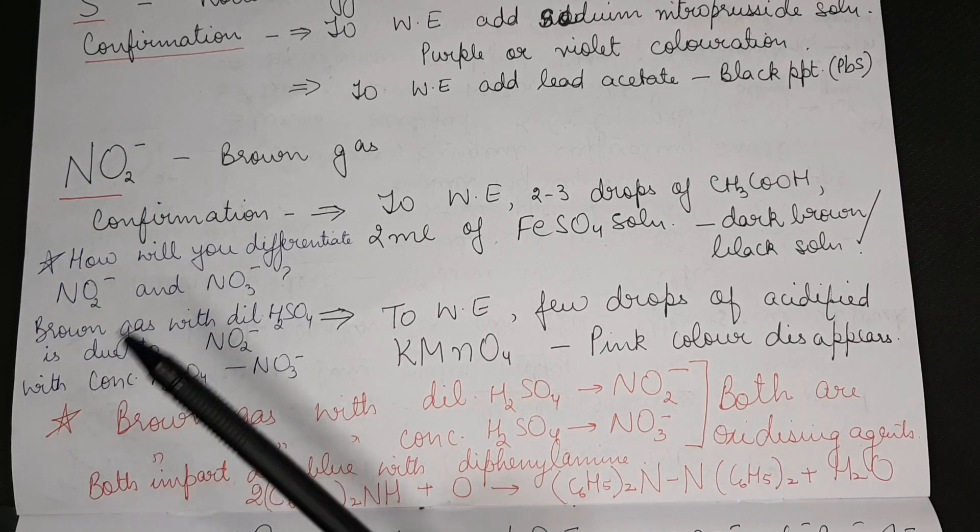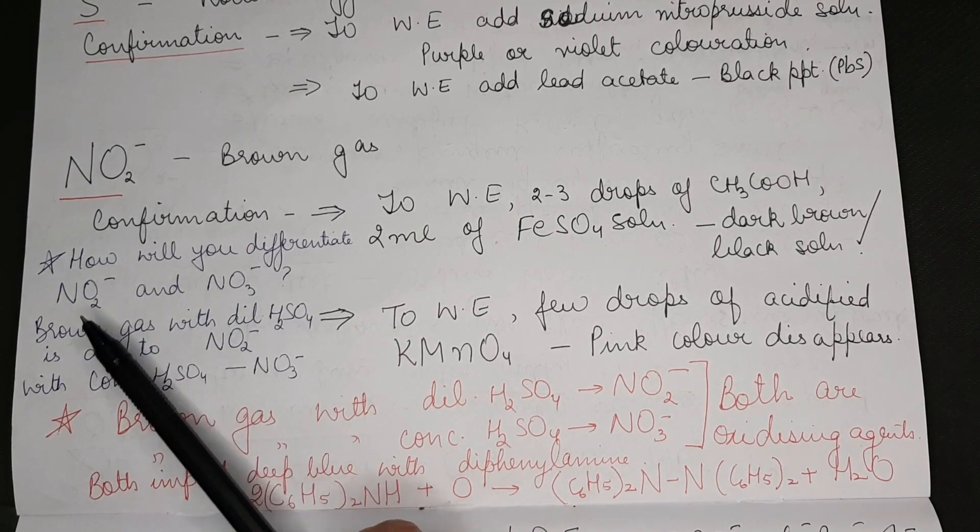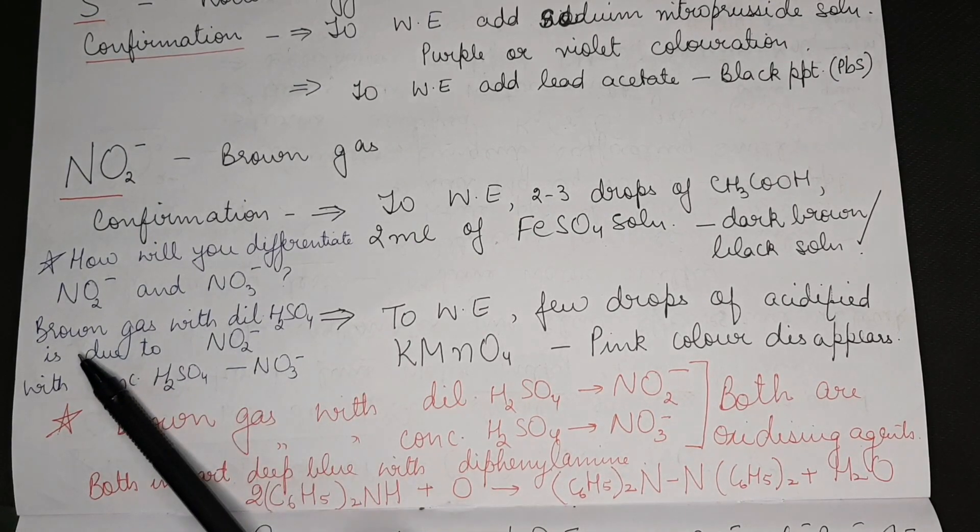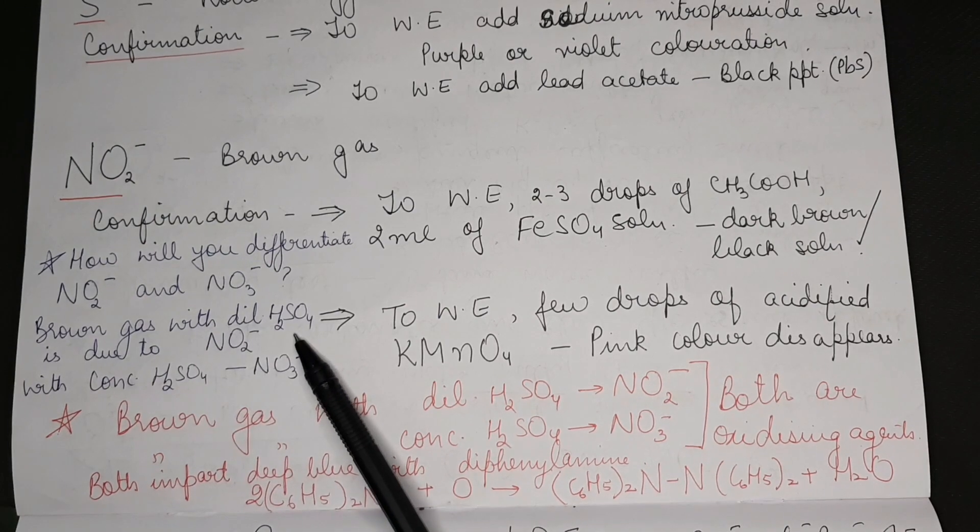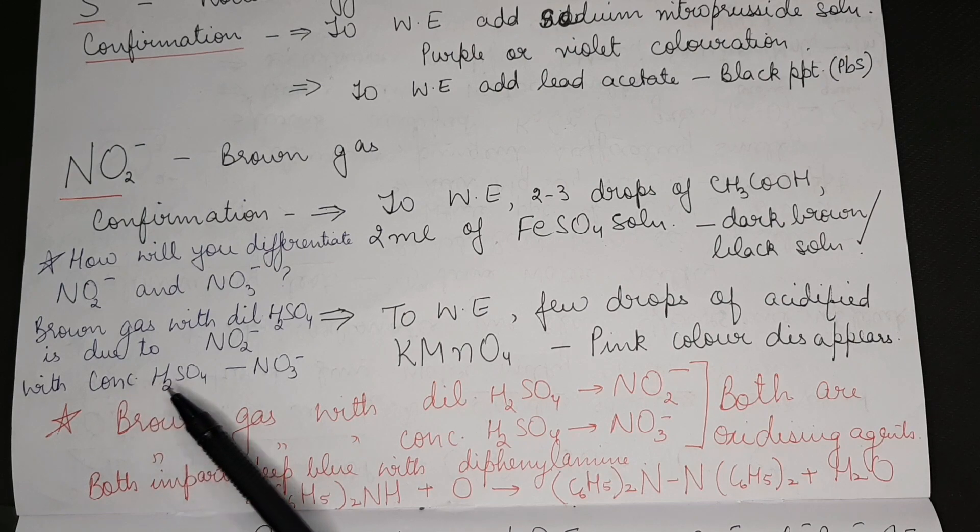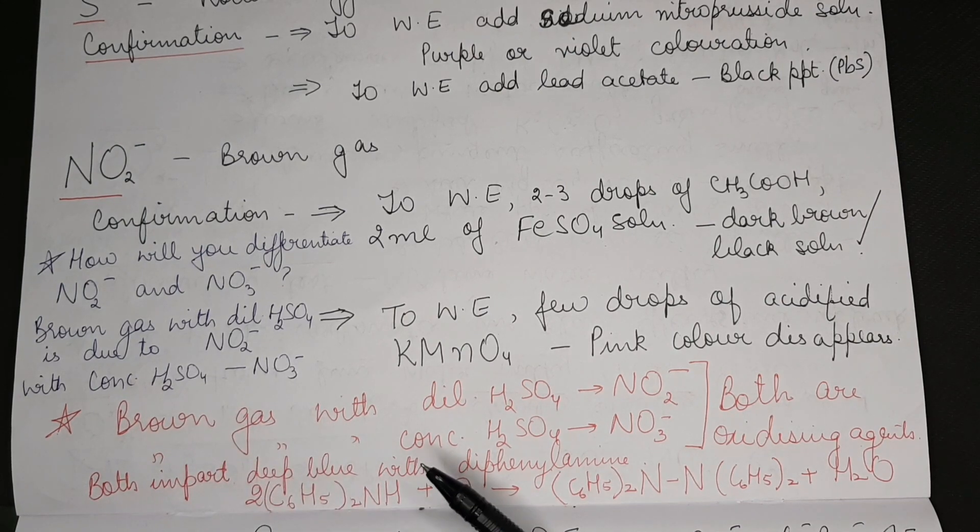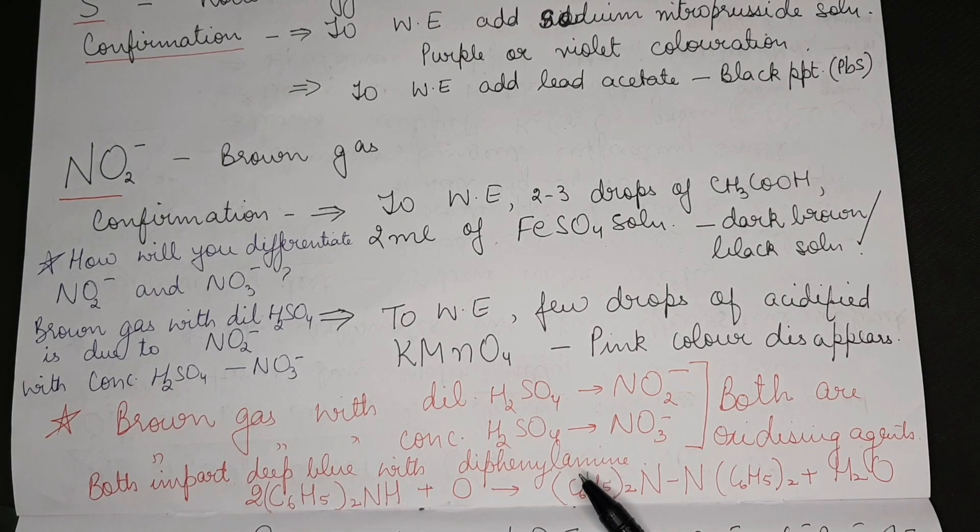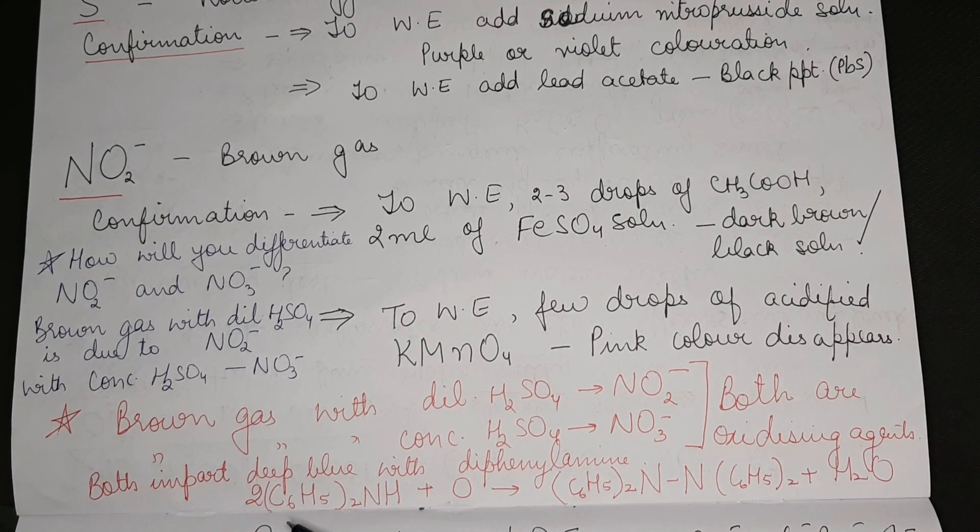What is the question that can be asked: how will you differentiate between nitrite and nitrate? Remember, nitrite gives a brown gas with dilute sulfuric acid, whereas nitrate gives a brown gas with concentrated sulfuric acid. Both are oxidizing agents.